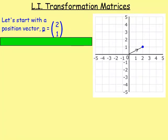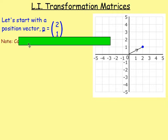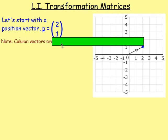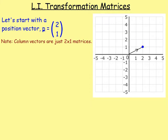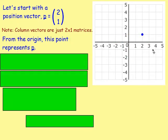What is this all about? Well, let's start off with a position vector — Vector P, which has the entries 2, 1, as shown in this diagram. I'm talking about a vector, but really a position vector or a column vector is just, in 2D, a 2 by 1 matrix. This diagram here represents that position vector, which means this point 2, 1, from the origin — it represents Vector P.